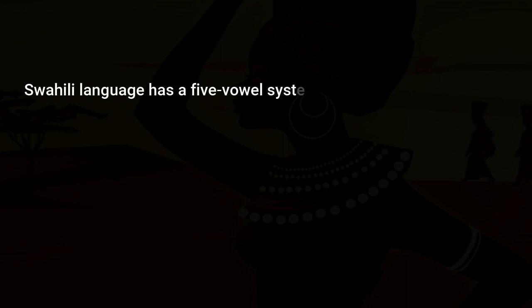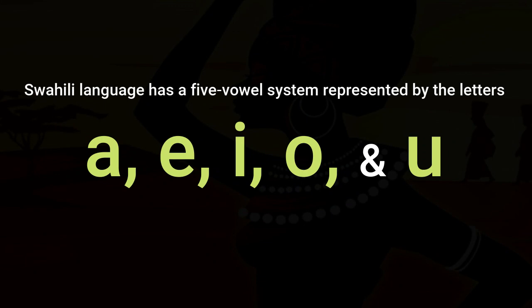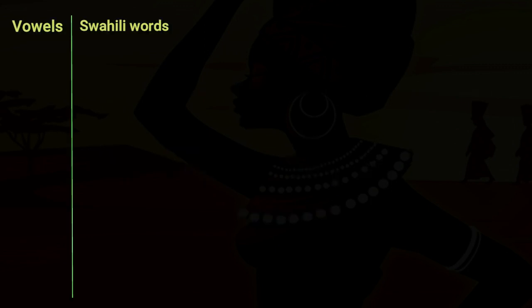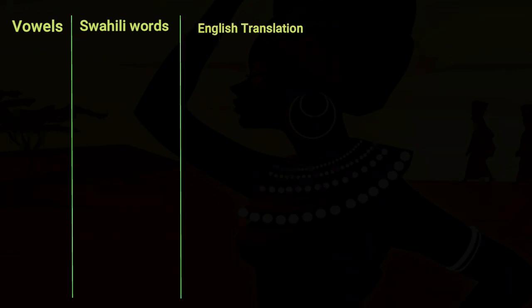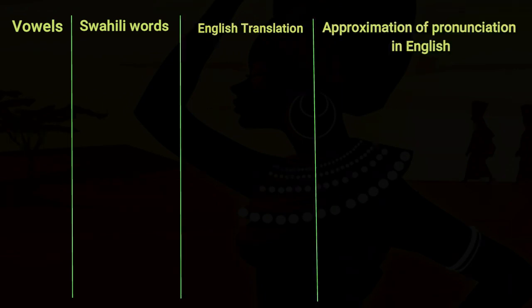The Swahili language has a five-vowel system represented by the letters A, E, I, O, and U, as exemplified below. So we are going to have the vowel, then Swahili words, the English translation, and then an approximation of pronunciation in English.